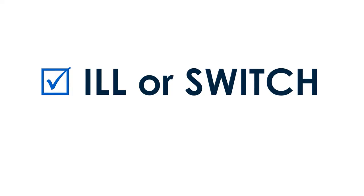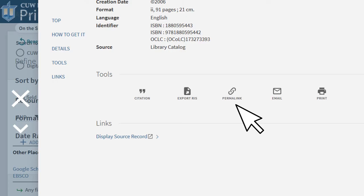The same applies for interlibrary loan or switch items, even journal articles. Use the Primo Everything search to locate the journal title or book and use the permalink inside Primo.